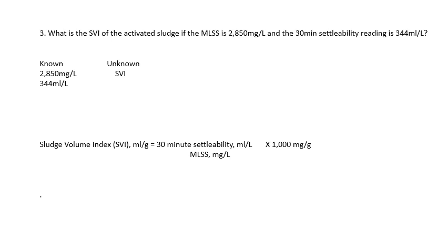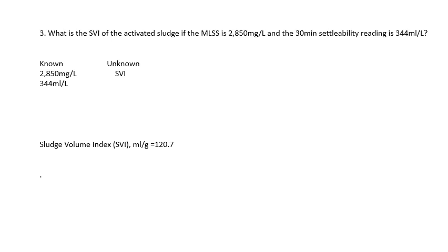The formula for Sludge Volume Index is still 30-minute settleability divided by the MLSS times 1000 milligrams per gram. Plugging our numbers in: 344 milliliters per liter divided by 2850 milligrams per liter, times 1000 milligrams per gram. Everything will cancel out and your answer is 120.7 milliliters per gram.